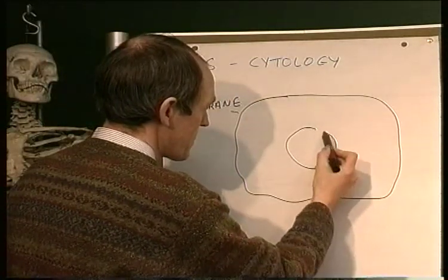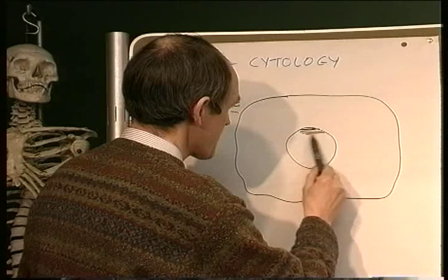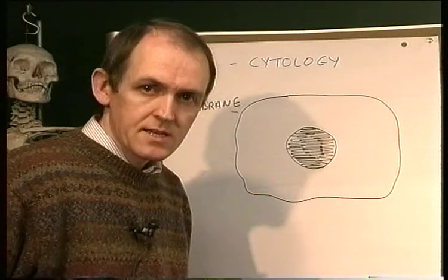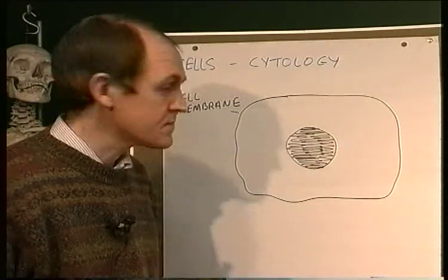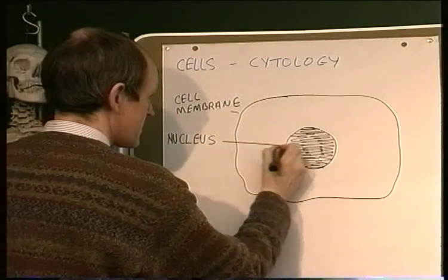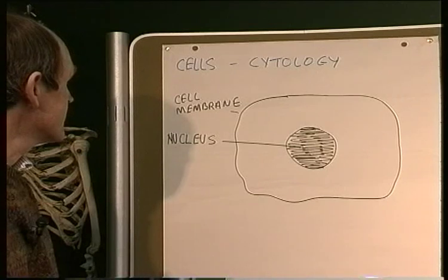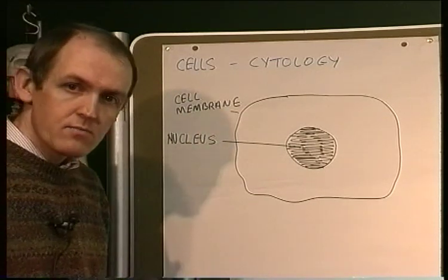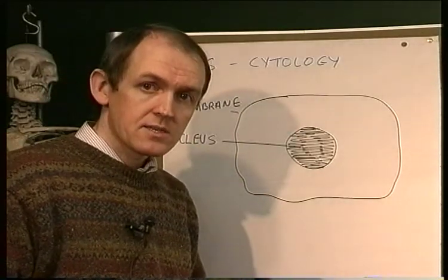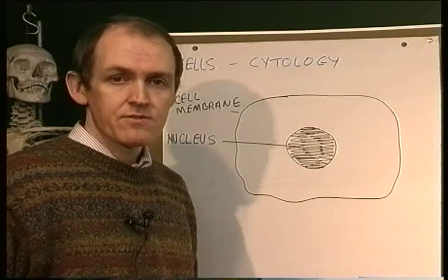In the middle you see another area, and depending on how you prepare your microscope slide sections, this is very often a dark-staining area. There's a darker area like this in the middle of the cell — this is the cell nucleus. With a good microscope, sometimes you can actually detect another membrane around the nucleus, referred to as the nuclear membrane.